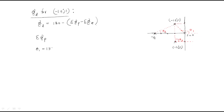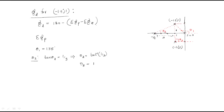To find theta2, the angle from the pole at minus 4 to minus 1 plus j1: the opposite side is 1 and the adjacent side is 3, so tan(theta2) equals 1 over 3. Therefore theta2 equals tan inverse of 1/3, giving theta2 equal to 18.43 degrees.